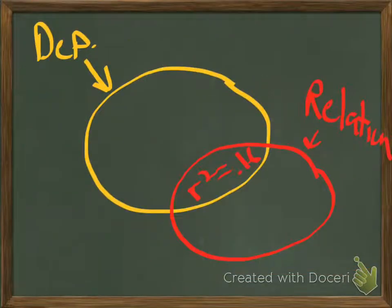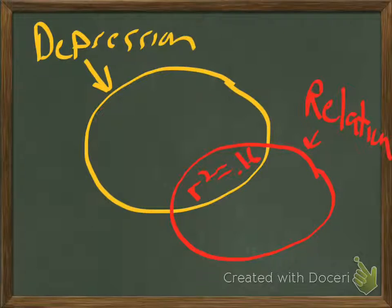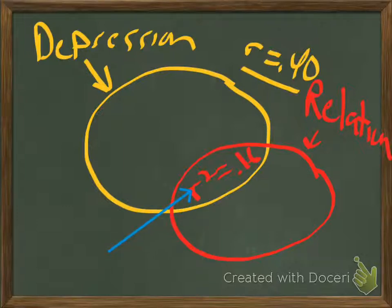Let's show what this looks like in a graph. The yellow circle represents the total amount of variance in depression. The red circle represents how much of the variance in depression is explained by relationship woes. The correlation between those two was 0.40, and where the two variables overlap, the r-squared — the coefficient of determination — is 0.16. So relationship woes explains 16% of the variance in depression.